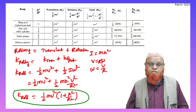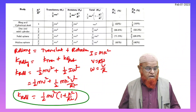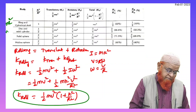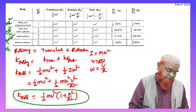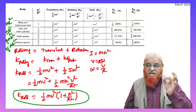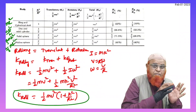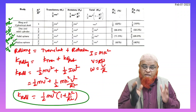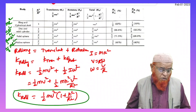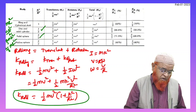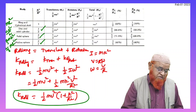There are four rolling bodies. A ring or hollow cylinder has a moment of inertia of mR², so k²/R² = 1. A disk has moment of inertia mR²/2, so k²/R² = 1/2. A solid sphere has moment of inertia 2/5 mR², so k²/R² = 2/5. A hollow sphere has moment of inertia 2/3 mR², so k²/R² = 2/3.